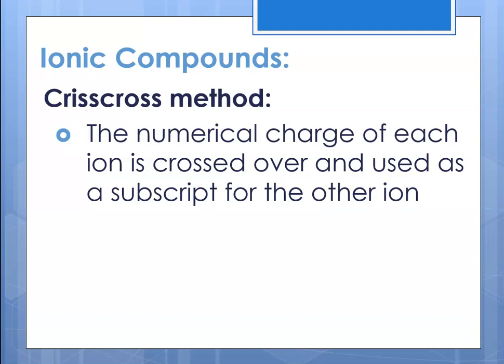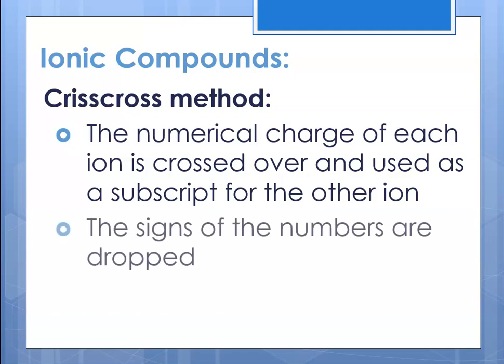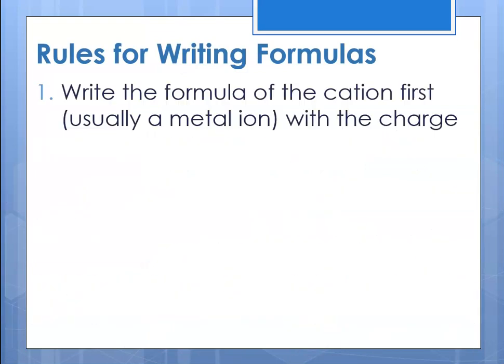What we're really doing in math terms is looking for the least common multiple. The signs of the numbers are dropped. The first rule is to write the formula of the cation — the cation is usually going to be a metal ion — along with its charge.